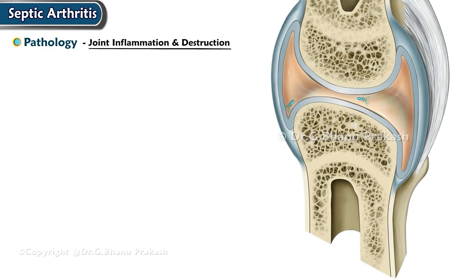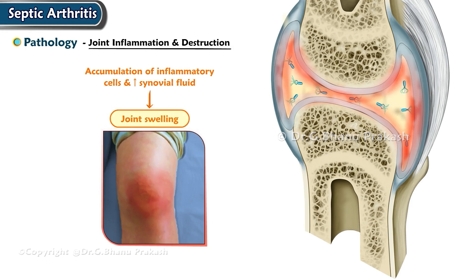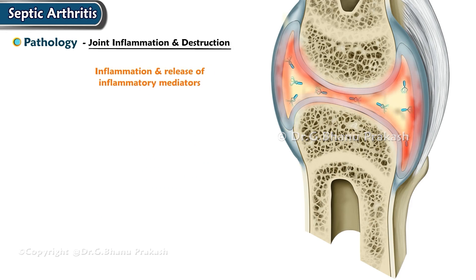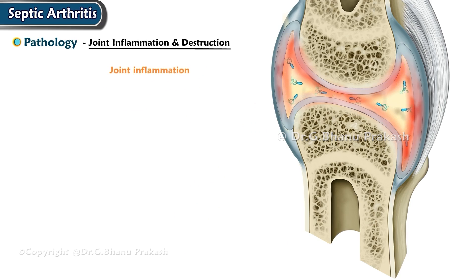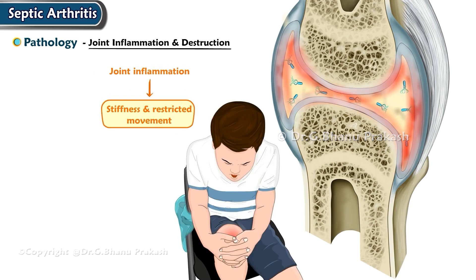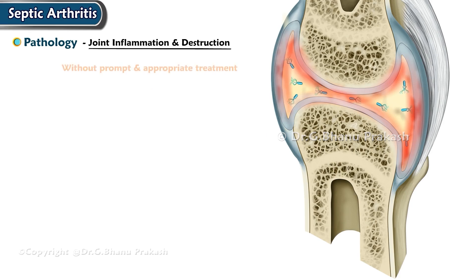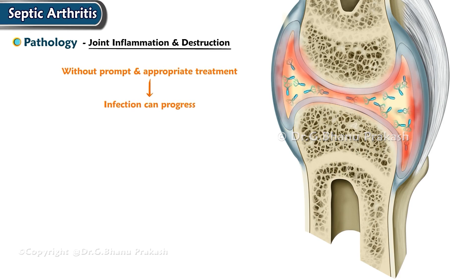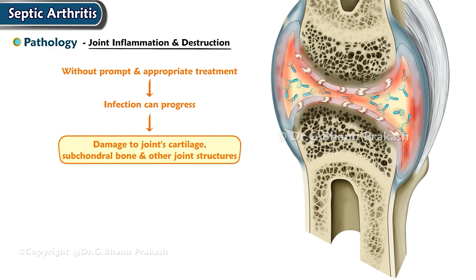Joint inflammation causes visible swelling due to accumulation of inflammatory cells and increased synovial fluid. The release of inflammatory mediators results in severe joint pain. Joint inflammation also leads to stiffness and restricted movement. Without prompt treatment, the infection can progress, leading to damage to the joint's cartilage, subchondral bone, and other joint structures.